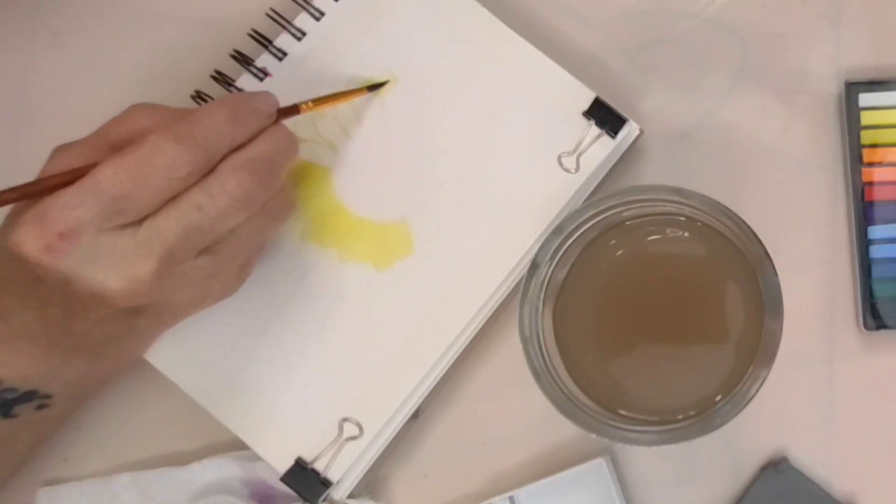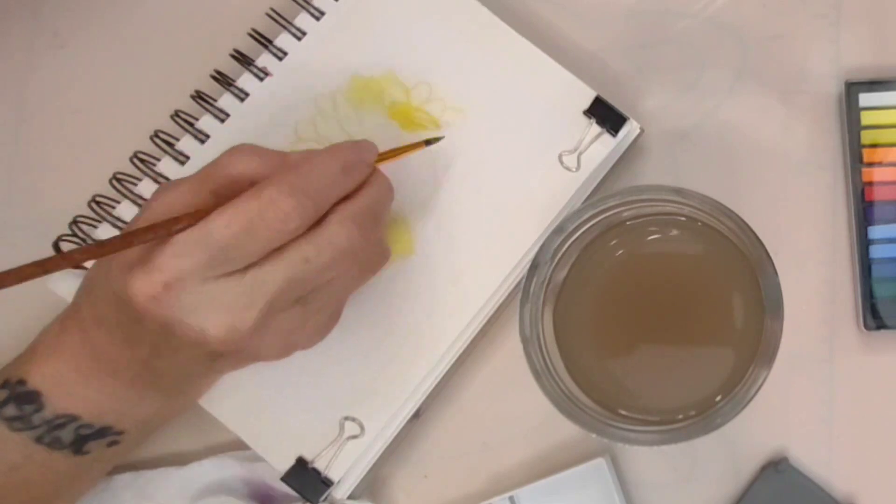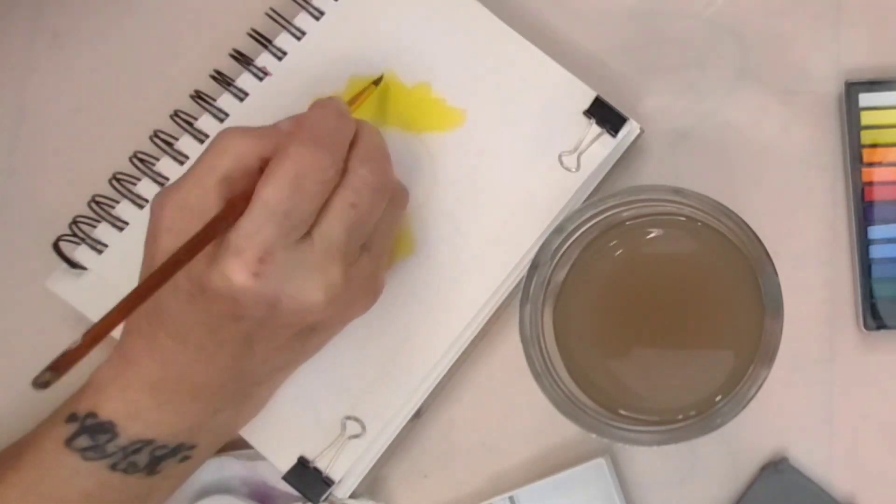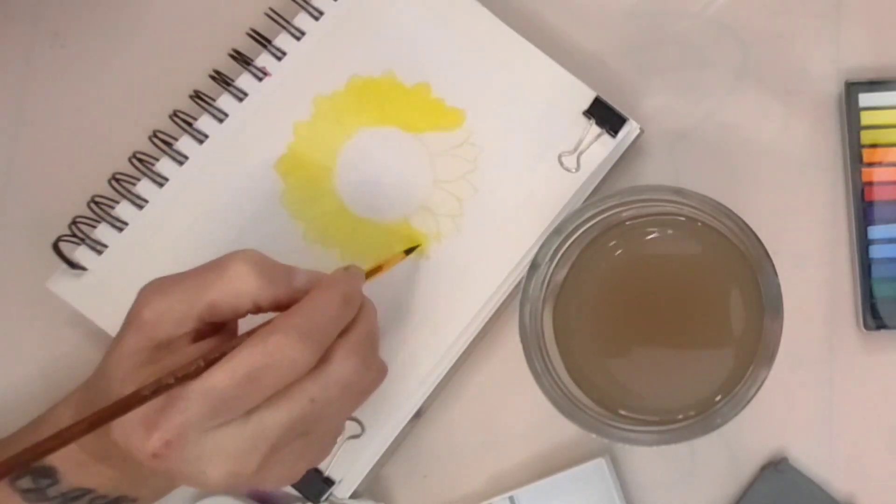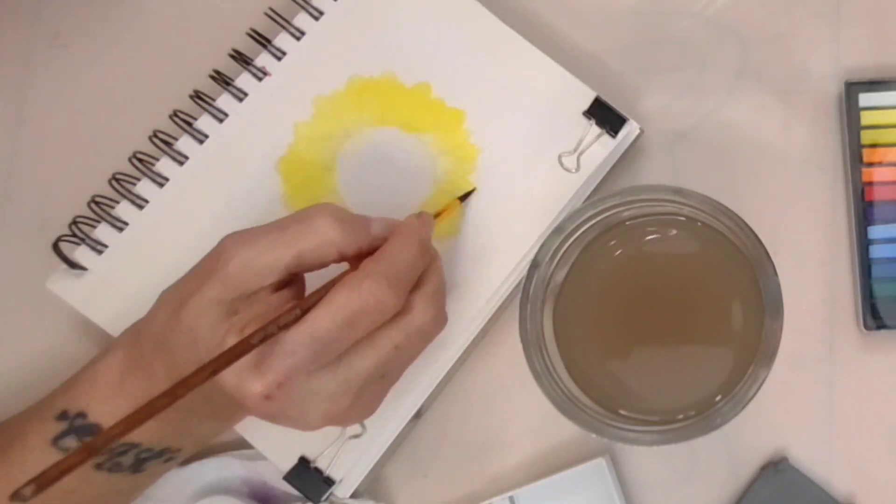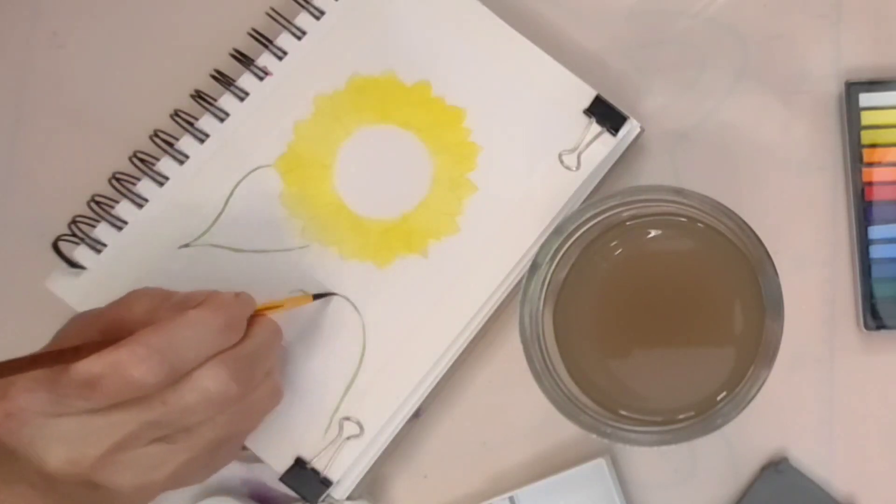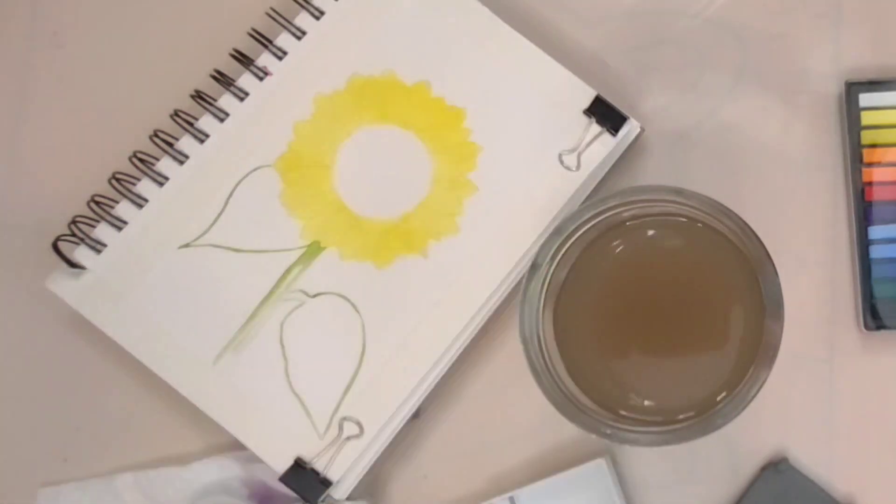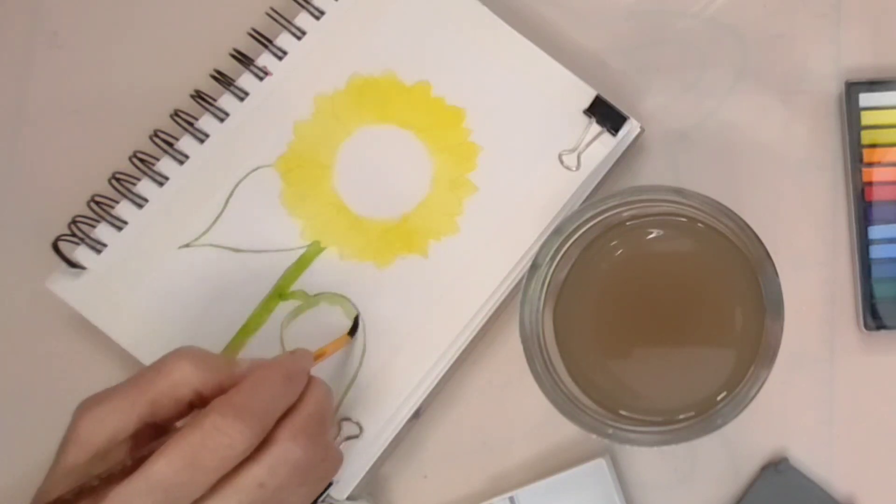Sunflowers have long held a special place in our hearts and gardens, captivating us with their vibrant yellow petals and towering stalks. Sunflowers symbolize warmth, positivity and prosperity. From ancient Greek mythology and Van Gogh's iconic paintings, sunflowers have been celebrated as representations of joy, loyalty, and even spiritual enlightenment.